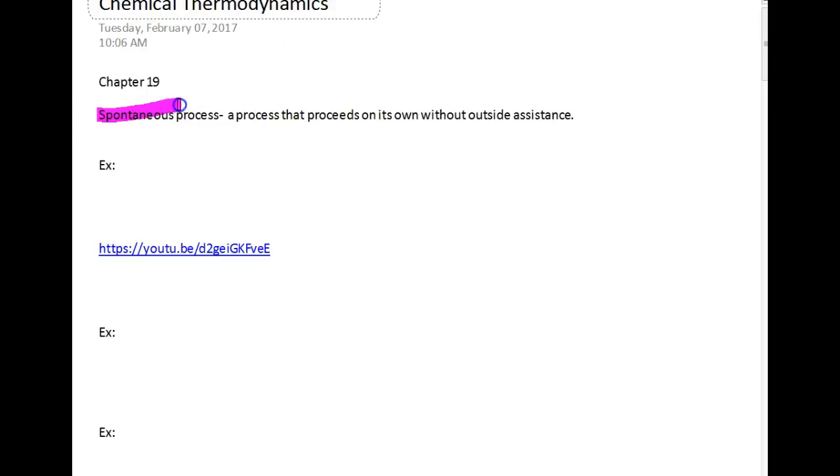We're going to dive right in talking about spontaneous processes. This is a process that proceeds on its own without any outside assistance. An example would be NaCl solid being placed in chlorine gas. This reaction will proceed to products spontaneously producing solid sodium chloride. Balance this guy out. I'm going to have you watch a video of this occurring. I'll post this video on Classroom so you can click on it right now, but make sure you come back and watch the rest of this video. So this would be a reaction we would call spontaneous.